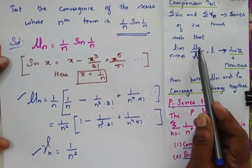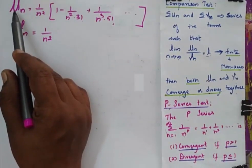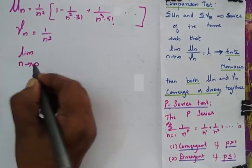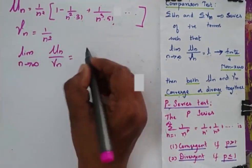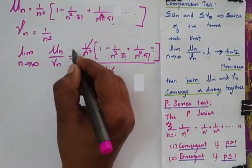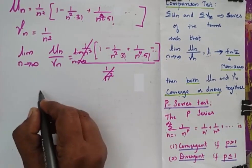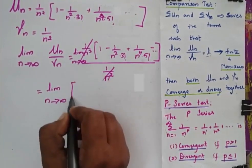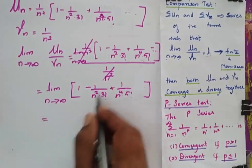We find the limit as n → ∞ of u_n / v_n. Substituting and cancelling the 1/n² terms, we get the limit as n → ∞ of [1 - 1/(n²·3!) + 1/(n⁴·5!) + ...]. Substituting n → ∞, the value we get is equal to 1.